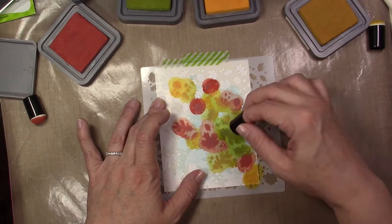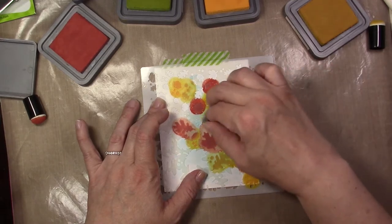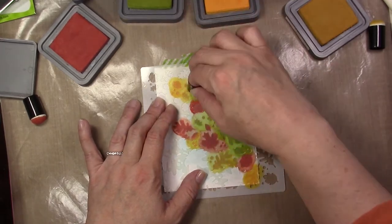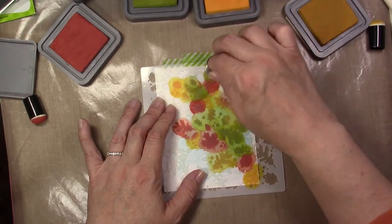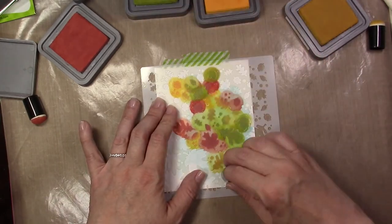So then once you have them all daubed out where you want them you're going to very carefully lift the stencil because this is pigment ink and then you just want to run it under some water and it'll rinse right off. And then you're going to go ahead and heat set that with the heat tool.